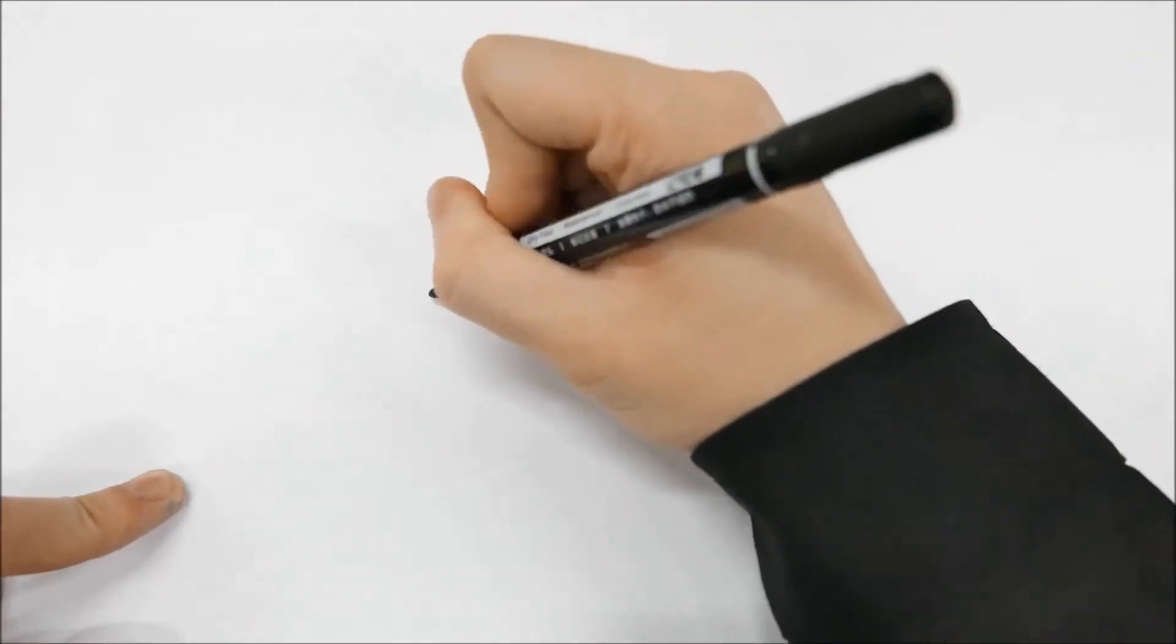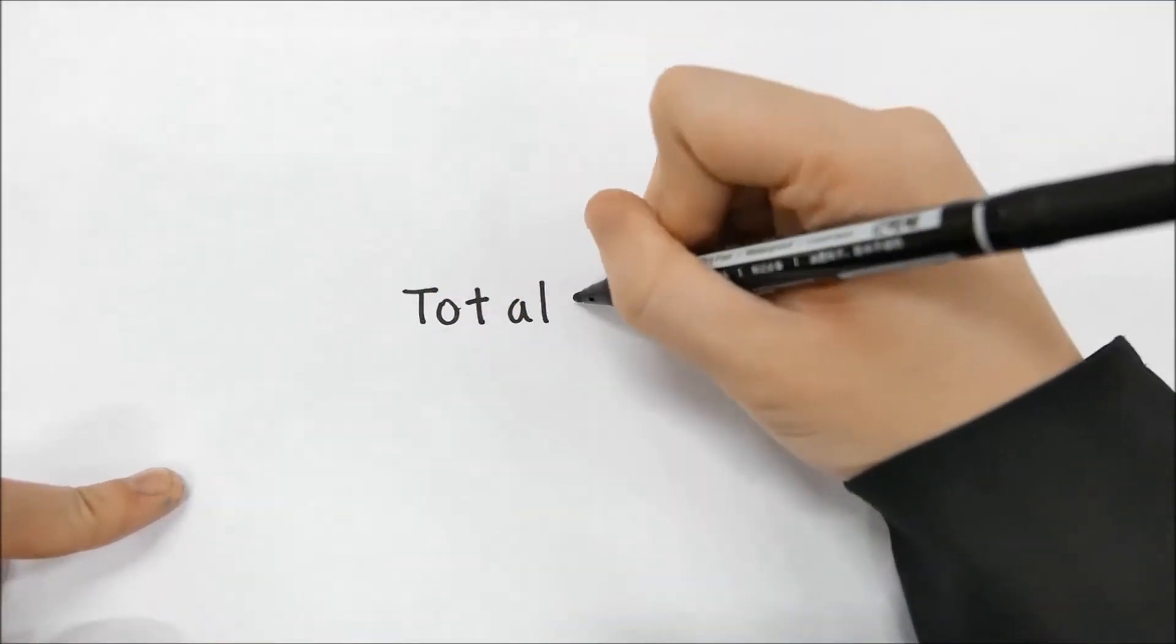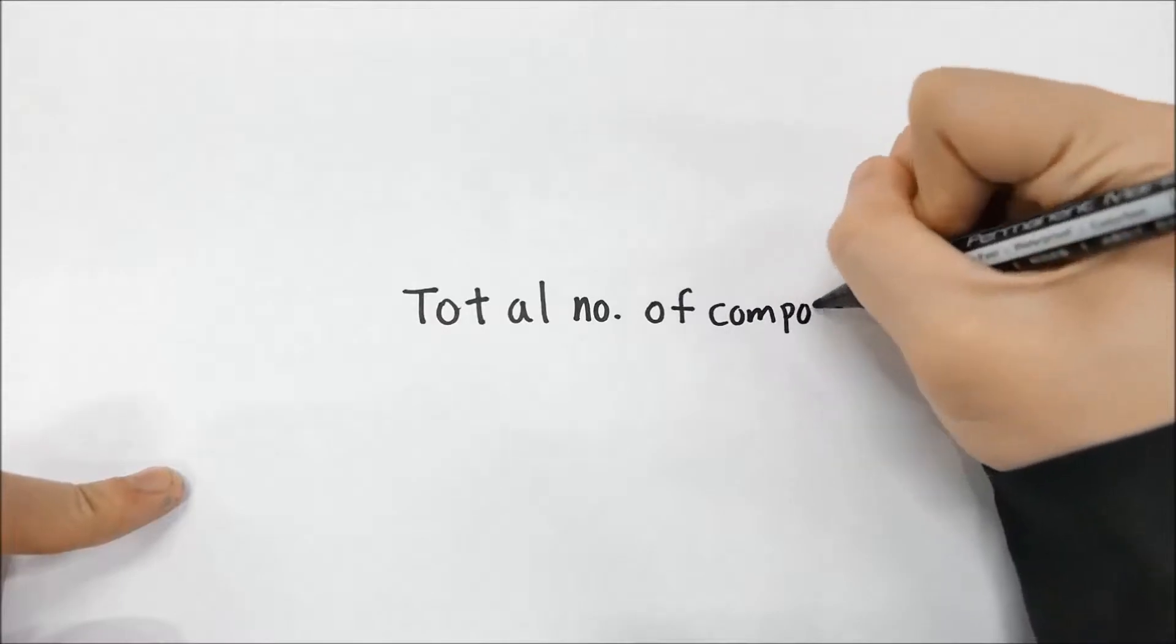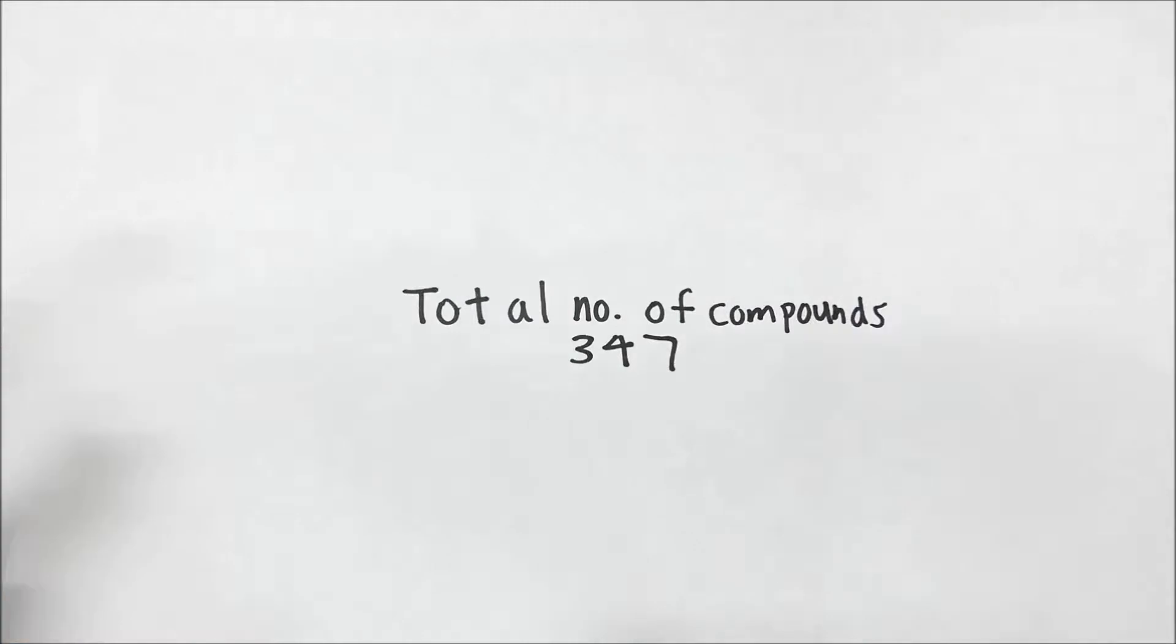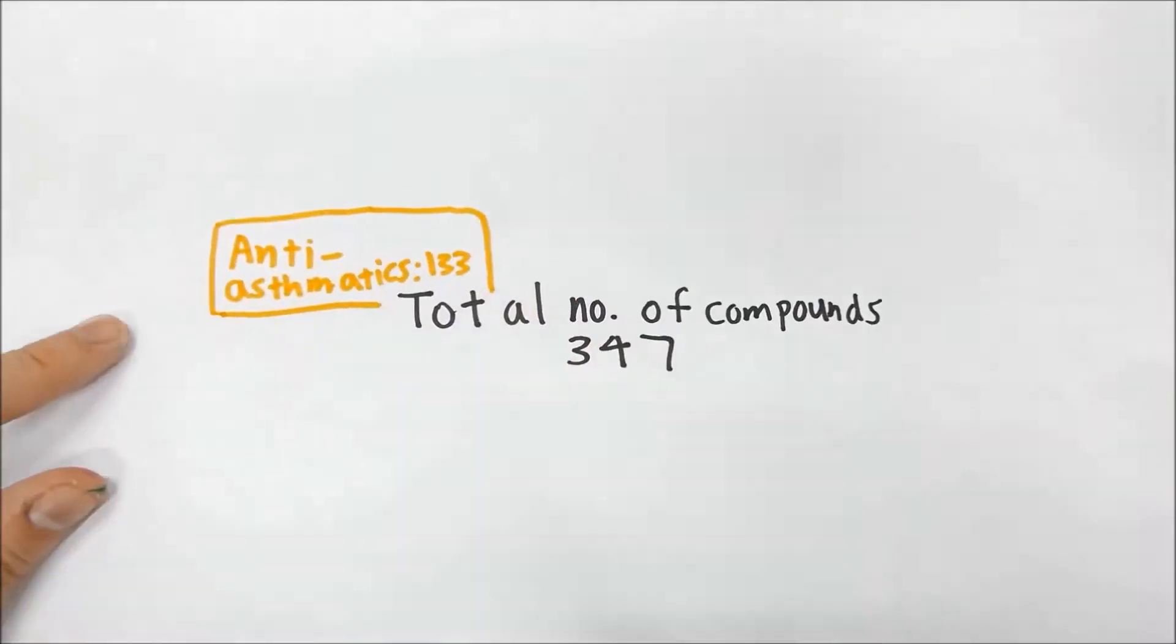Gas chromatography mass spectroscopic analysis has allowed us to identify a total of 347 different compounds, along with 10 important health beneficial properties that can be found amongst these compounds.